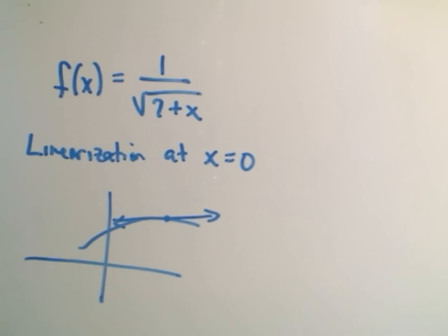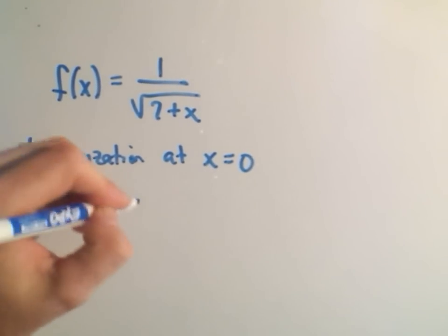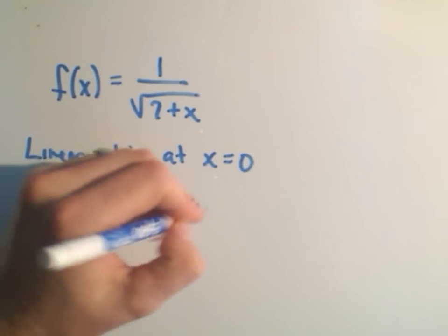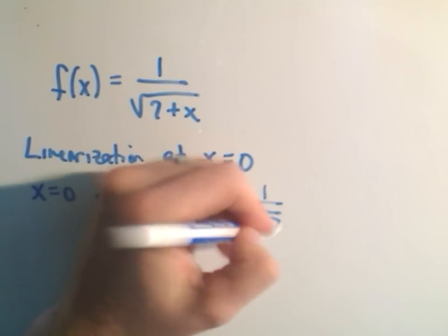You know, that's definitely not the graph of 1 over square root of 7 plus x. I'm just illustrating a point. But the idea is, okay, so we know the x-coordinate. If x equals 0, well, the y-coordinate, that's going to equal the value we get when we plug 0 into the function, which is just going to be 1 over square root of 7.